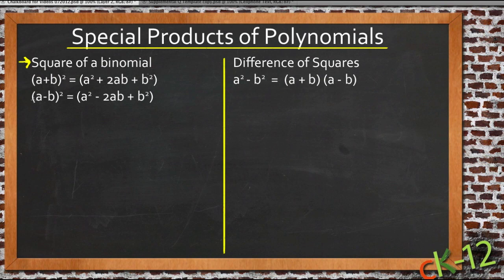The square of a binomial means that you're taking a binomial like a plus b and you're squaring it, you're multiplying it by itself. When you do that, the pattern of numbers that results is always the same.